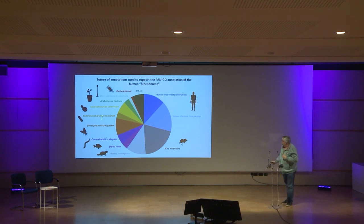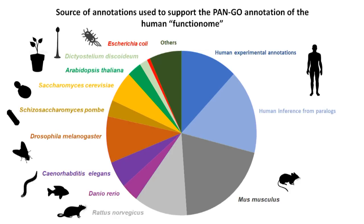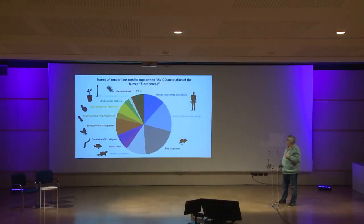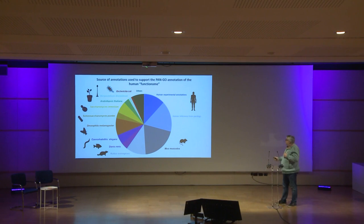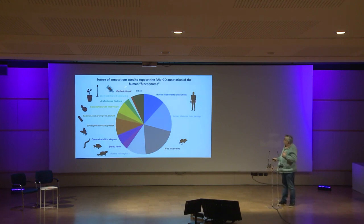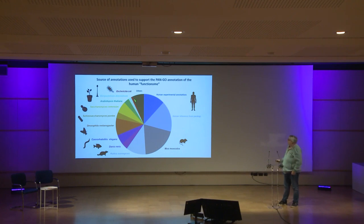Of course, all the other model organisms are really contributing a lot, especially mouse and rat. And when you follow evolution, you might think the further we go from human, the less contribution there is — but that's not totally true. We have a big part from Drosophila melanogaster, and of course the yeasts are really good models even to understand what's happening in humans. Even E. coli contributes to 0.7% of the annotations. But keep in mind that in total we have about 200,000 annotations, so even 0.1% is over 1,000 annotations — meaning 1,000 E. coli annotations contributed to the understanding of human function. And of course we have 142 species, so there is a big part from all the other species.